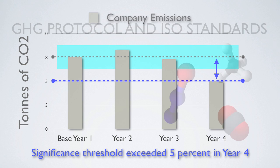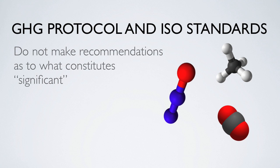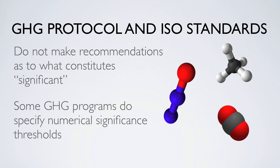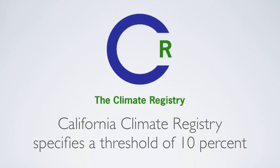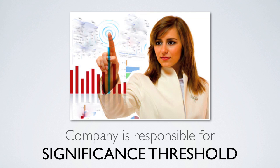The Greenhouse Gas Protocol and the ISO standards do not make recommendations as to what constitutes significant. But some GHG programs do specify numerical significance thresholds. For example, the California Climate Action Registry specifies a threshold of 10% of the base year emissions. It is the responsibility of the company to determine the significance threshold that triggers the recalculation of base year emissions.